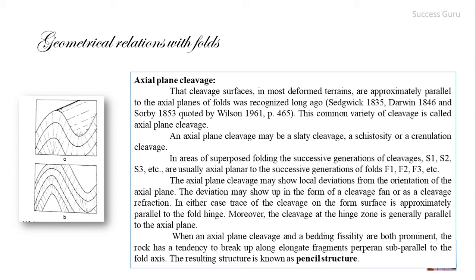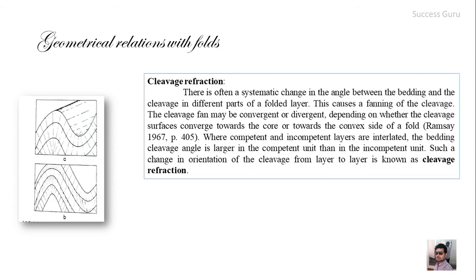When both axial plane cleavage and bedding fissility are prominent, the rock tends to break along elongated fragments. Since the bedding plane and rock cleavage are both strongly developed, the rock breaks along both, producing pencil-like structures. This is called pencil structure.